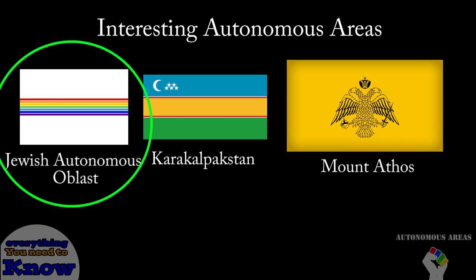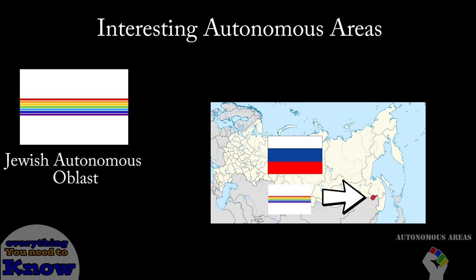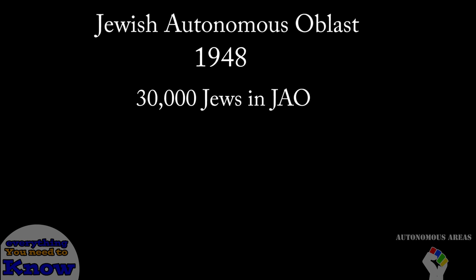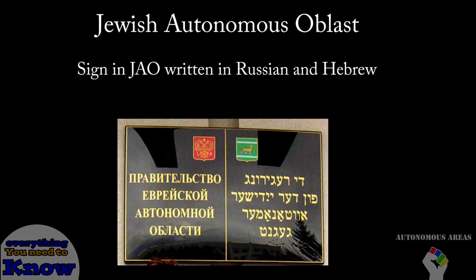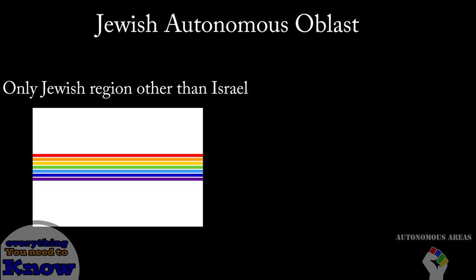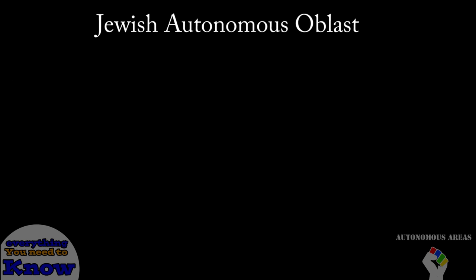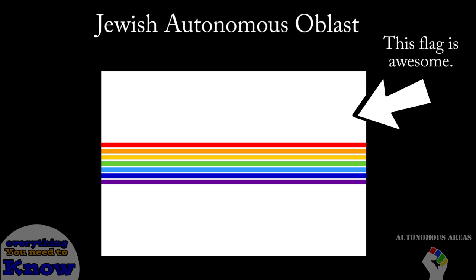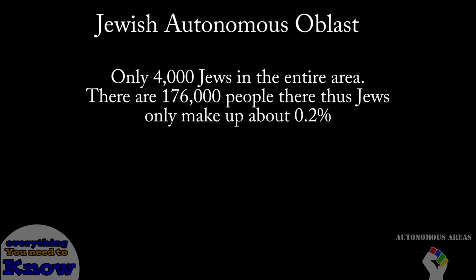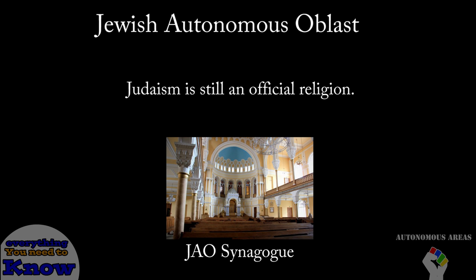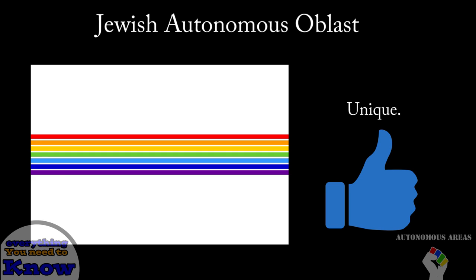Let's start with the Jewish Autonomous Oblast in Russia. This area rose up in 1934 as a refuge in the Far East for Jews in Russia. It is stated that in 1948 there were as many as 30,000 Jews in this area. It is the only Jewish autonomous area or state other than Israel in the world. Currently there are only 4,000 Jews in the JAO, and they only make up 0.2% of the population. But Judaism is still one of the area's official religions — truly a unique gem.